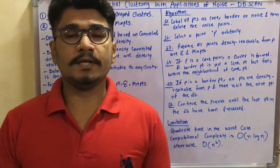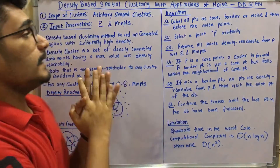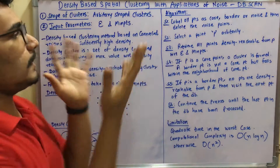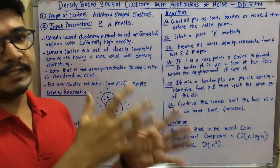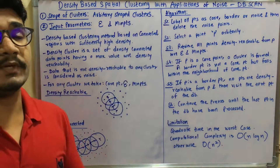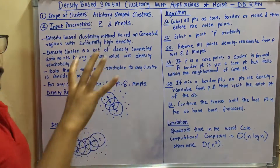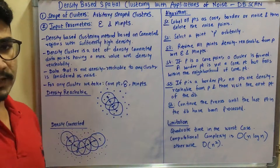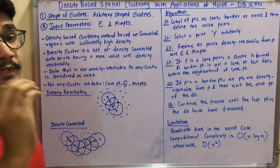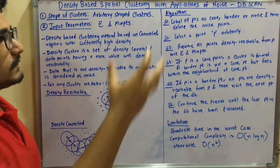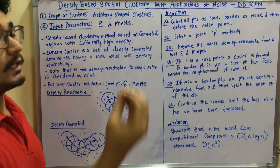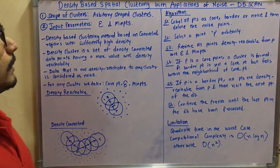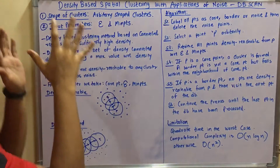Welcome to another interesting video on data mining. Today we'll be seeing what DBSCAN is — that is Density Based Spatial Clustering with Applications of Noise. The title looks big, similar to BIRCH which stood for Balanced Iterative Reducing and Clustering using Hierarchies. DBSCAN uses density-based techniques and spatial clustering, and is equipped with properties that allow it to remove outliers or noise from data points.